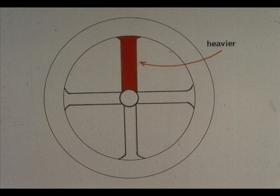Sometimes the webbing of a wheel varies from one side to the other. The webbing shown on the top side of the wheel is thicker than the bottom. This means that the top side of the wheel will be heavier, throwing the wheel off balance.